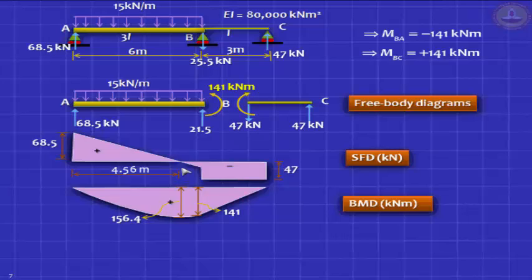It is actually easy to find out where it is maximum. 68.5 is your reaction at the left end. The shear force will drop at the rate of 15 kN per meter. So wherever it drops to zero is easily obtained by 68.5 divided by 15. That is how you get 4.5. Once you know this value, you can find the bending moment at that location. It turns out to be 156.4 kNm, more than the bending moment you get under the support.